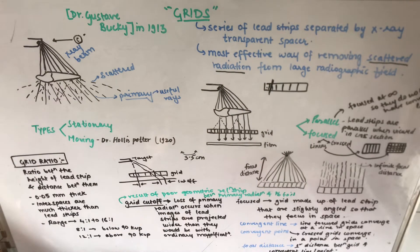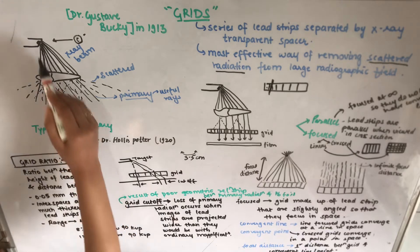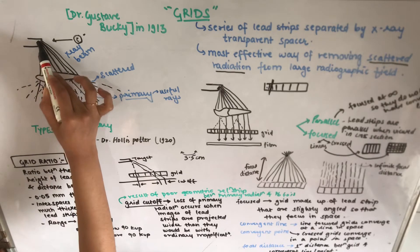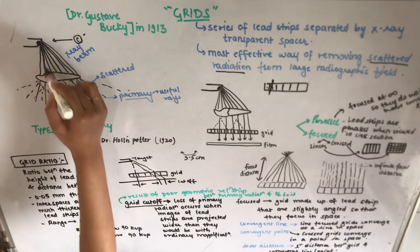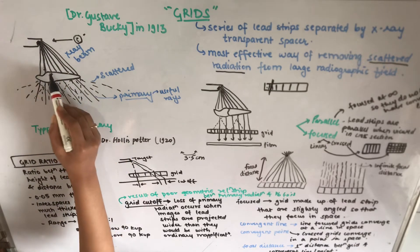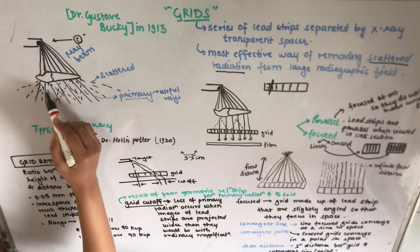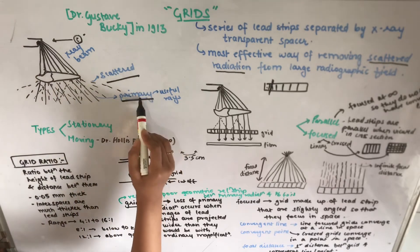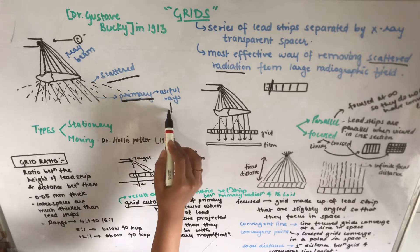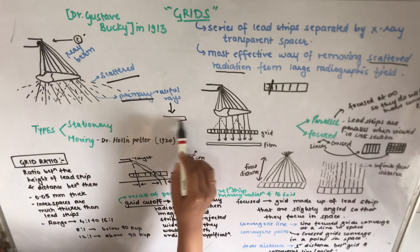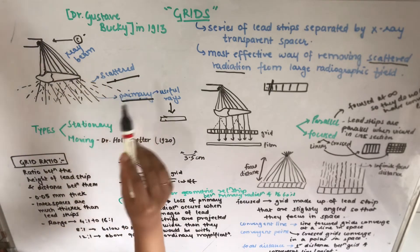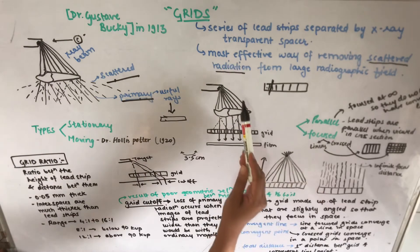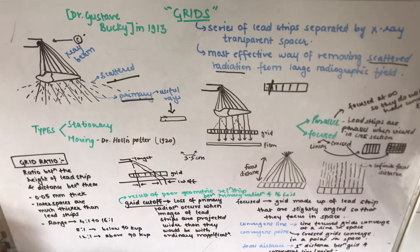Grids are the most effective way of removing scattered radiation or secondary radiation from a large radiographic field. When the x-ray beam hits the object, it produces both scattered radiation and primary radiation. Primary radiation is useful — it falls on the film and produces the radiographic image — but scattered radiation is not useful, and the grid helps remove it.